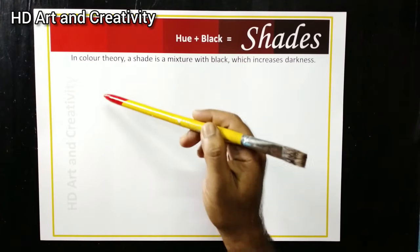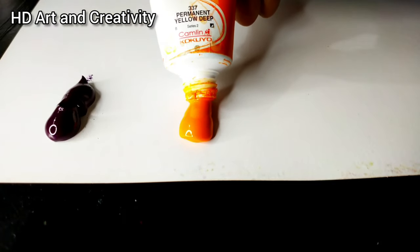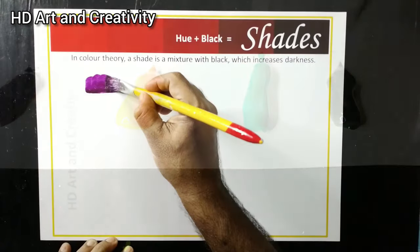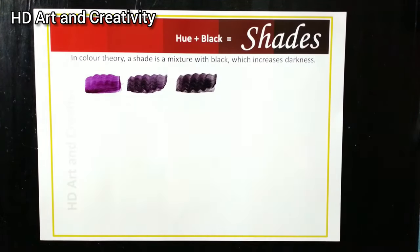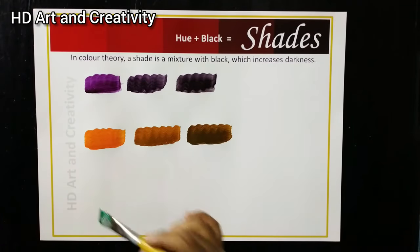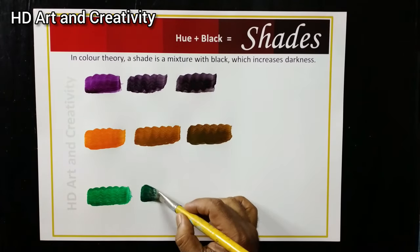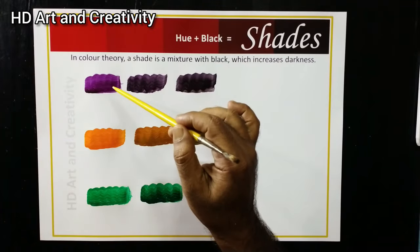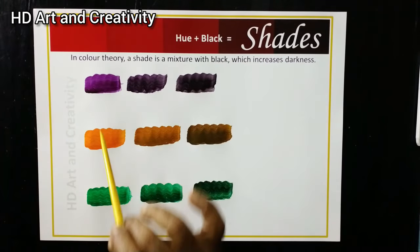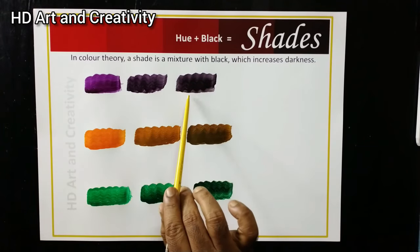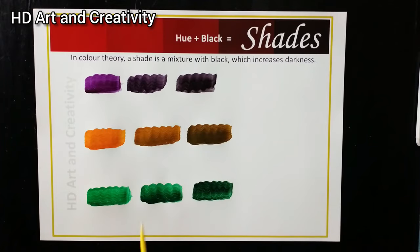Let's see some examples here. As you can see, I mixed a color with black to make shade. Now we can see the shade. Now let's move on to tone.